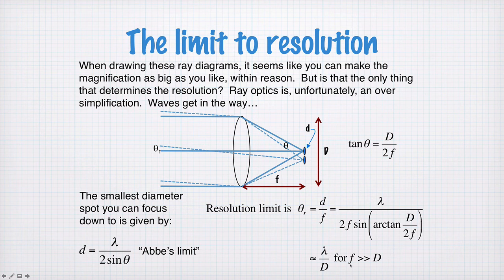Now, we can approximate this for the case where the focal length is much, much bigger than the diameter. And this will be valid for something like a telescope, where the focal lengths can be very large compared to the diameter of the lens. Less valid for a microscope, however. Anyway, in this limit, we get that the resolution, theta r, the angular resolution...